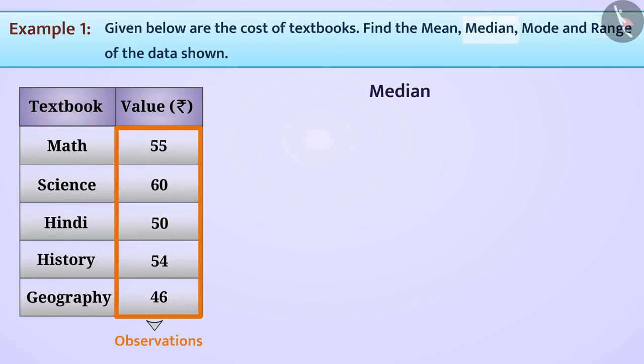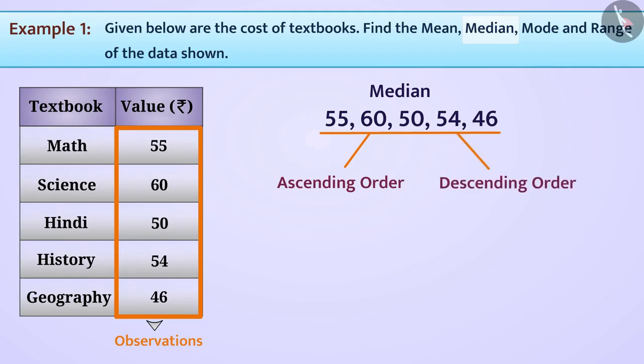Now to find the median, let us arrange the data in ascending or descending order. We have learned that the observation in the middle of the range is the median of the range. Looking at the data provided, observation 54 is the centermost value and therefore it is the median.